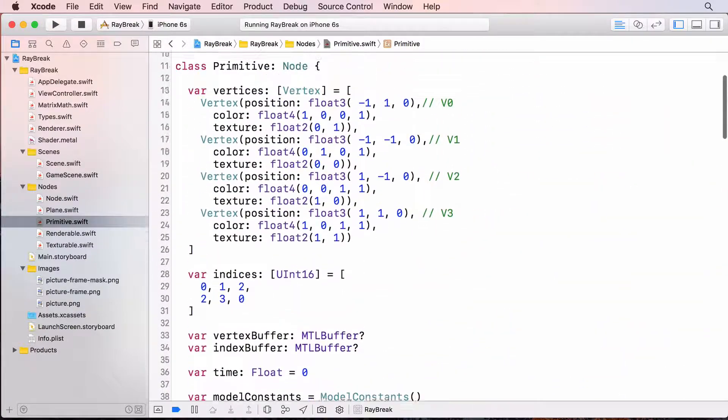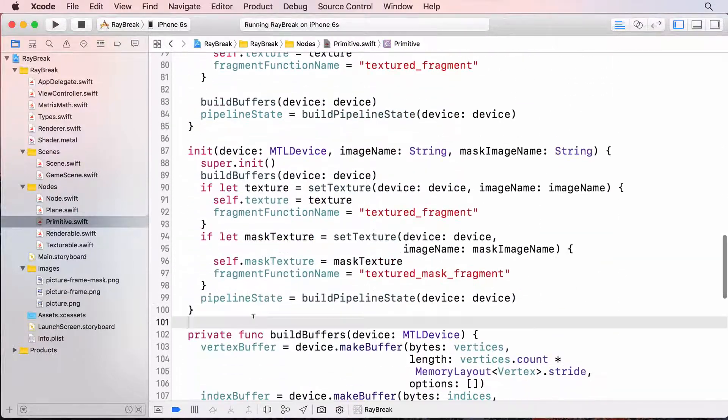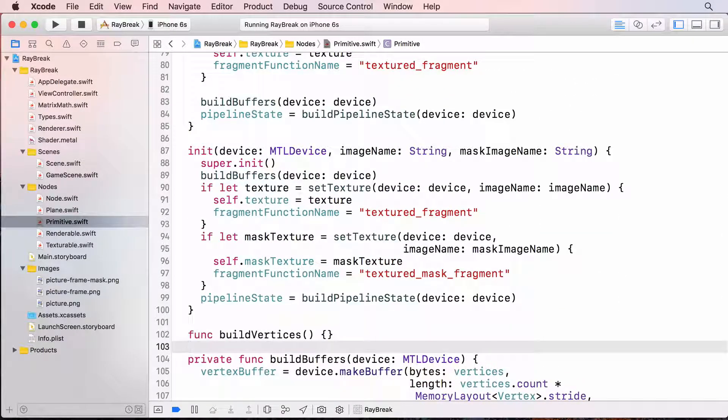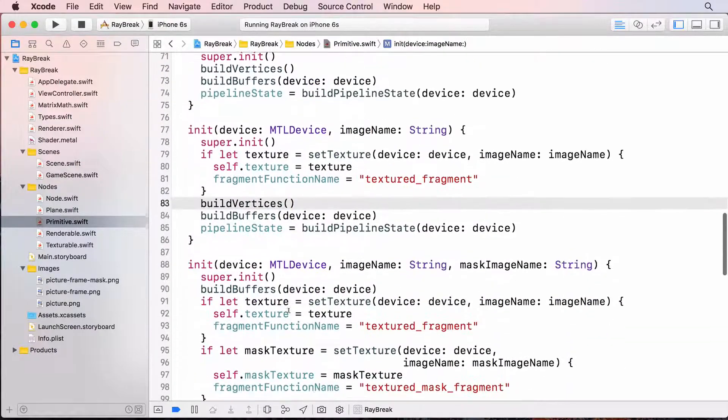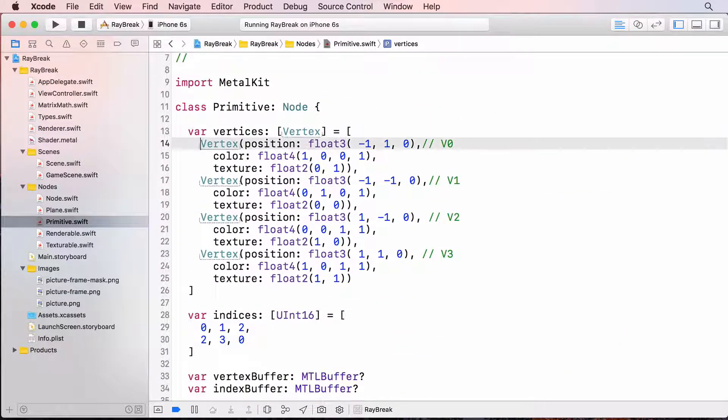The vertices are currently a stored property but we can't override that. So I'll add a build vertices method for the plane and the cube to override. And I'll call this from the three initializers before setting up the vertex and index buffers. And I'll remove the data from the vertices and indices arrays.